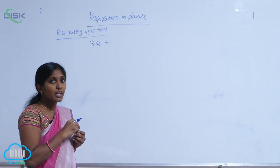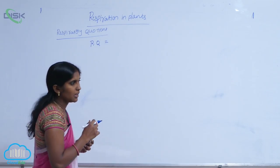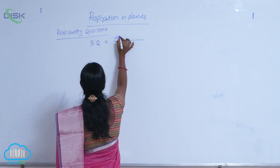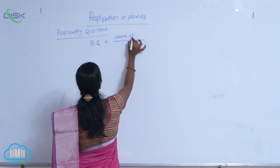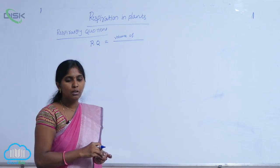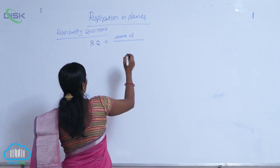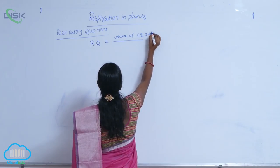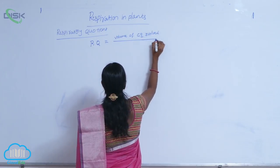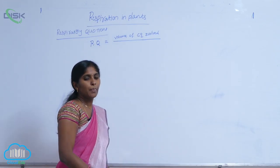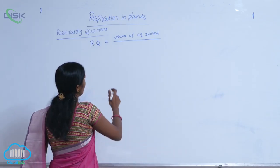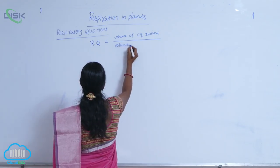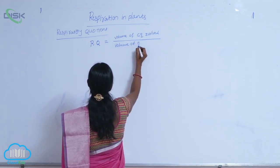So it is the ratio of volume of CO2 evolved and the volume of O2 consumed.